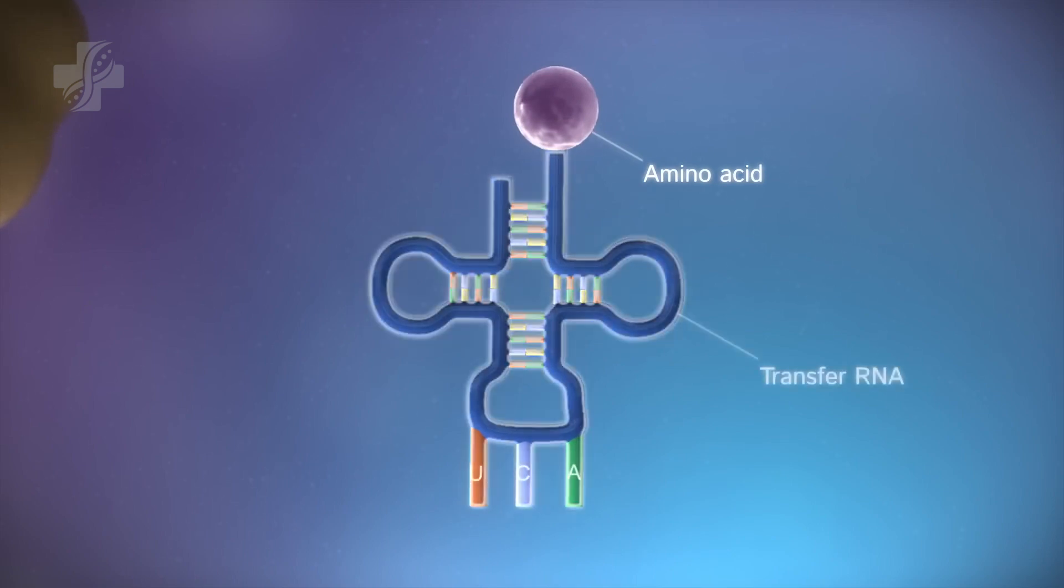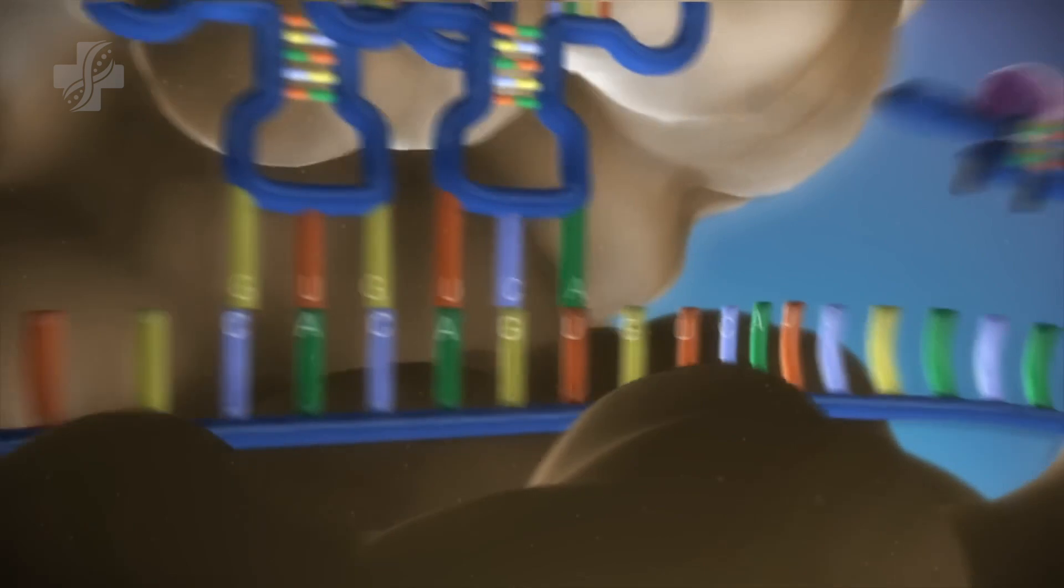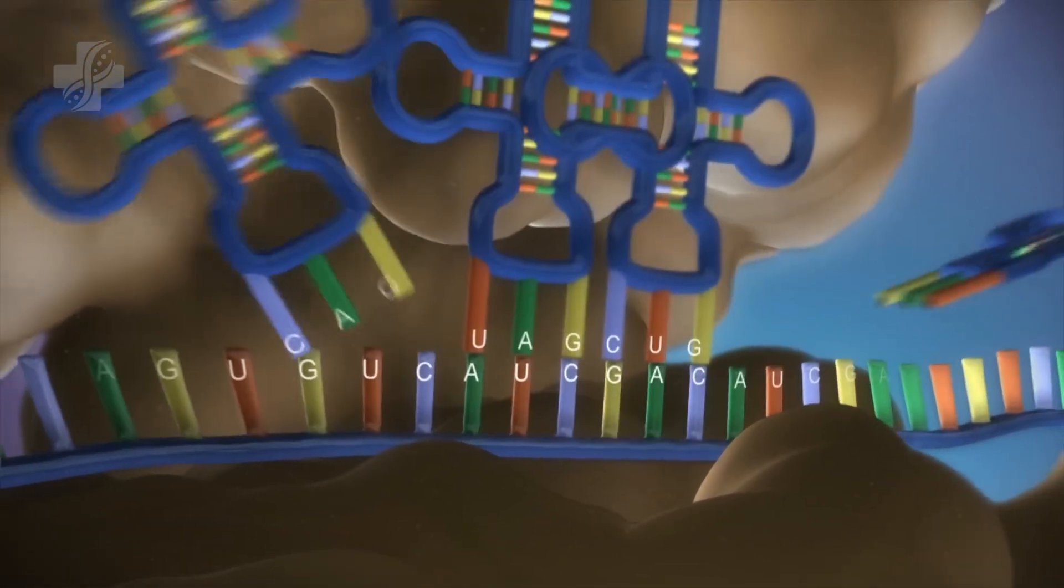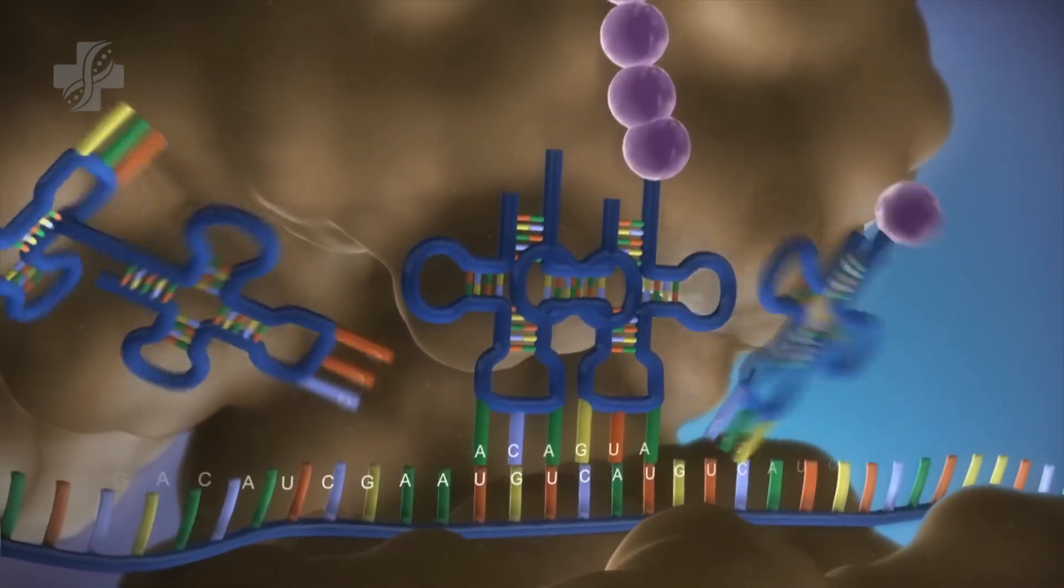Transfer RNA molecules carry the amino acids to the ribosome. The messenger RNA is read three bases at a time. As each triplet is read, a transfer RNA delivers the corresponding amino acid.